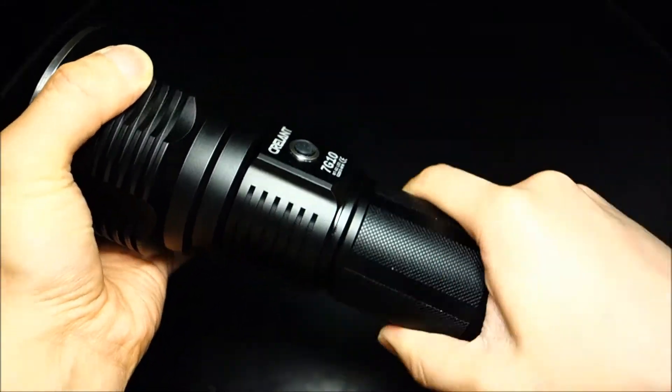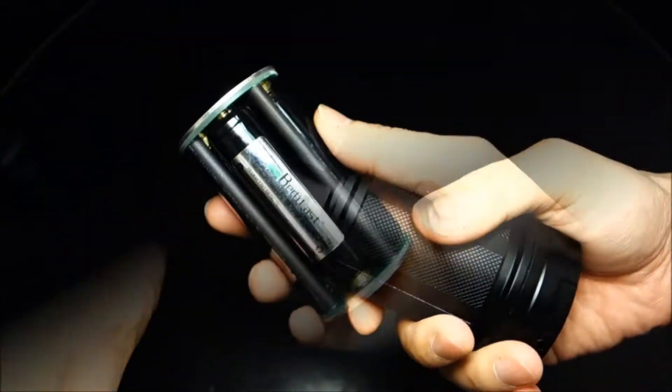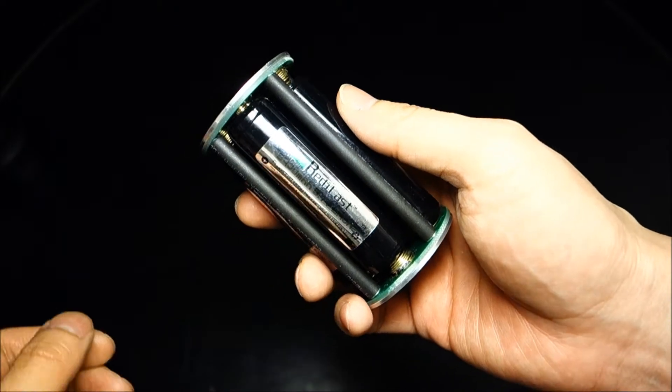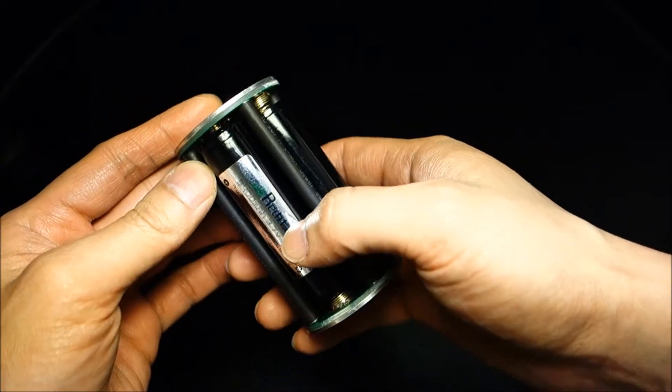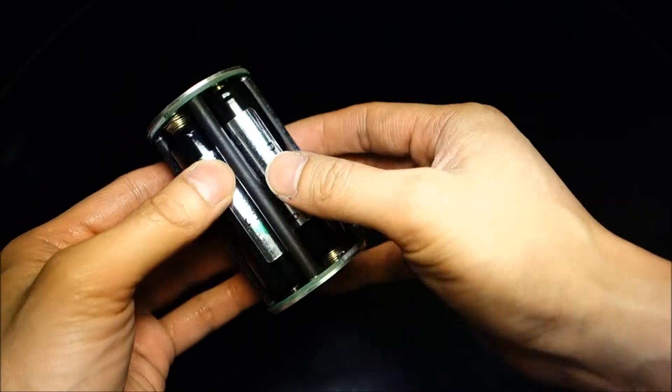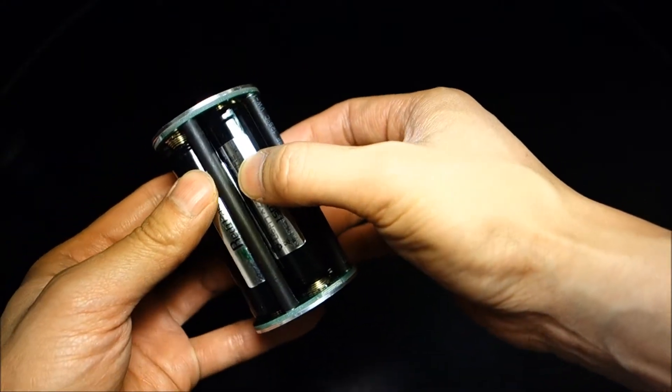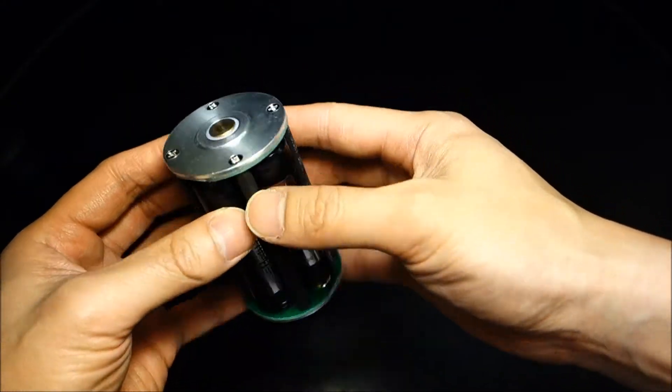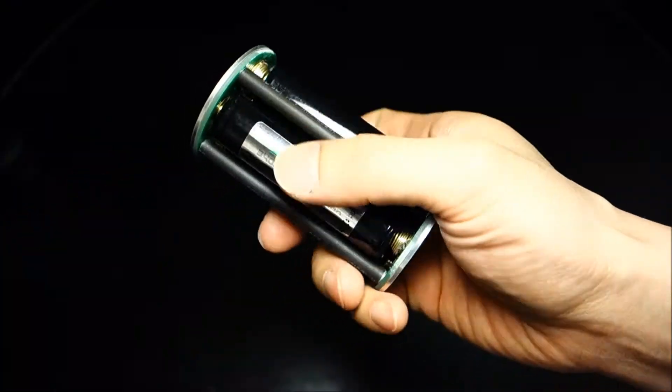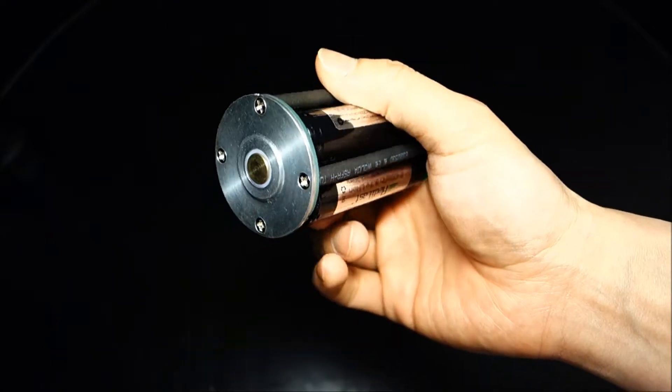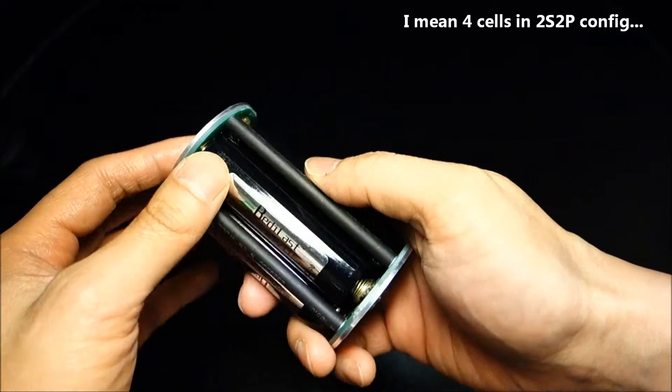Now, getting the light unscrewed, you will see the battery carrier, which holds four cells in a 2S2P configuration. So, what that simply means is that there are two cells in series, and then those two cells are wired in parallel with the other two cells, such that this pumps out 8.4 volts, instead of normally you would expect it to be 16.8 volts, but it's not. It's actually 8.4 volts for the two cells.